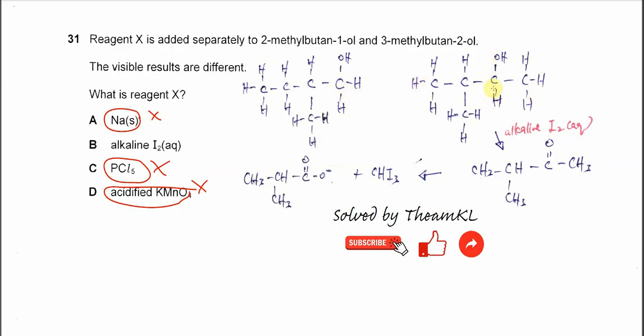So the CHOHCH3. This one has CH2OH. The 3-methylbutan-2-ol, because it has this group, CHOHCH3, it will react with alkaline iodine.